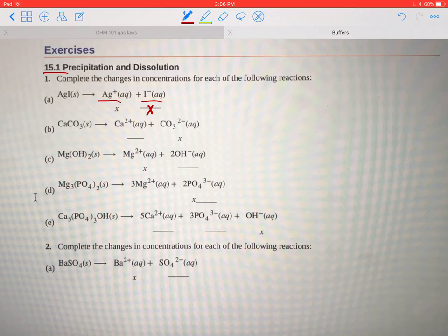For B, we have calcium carbonate going to form one calcium ion and one carbonate ion. So if carbonate is X, calcium ion is X.